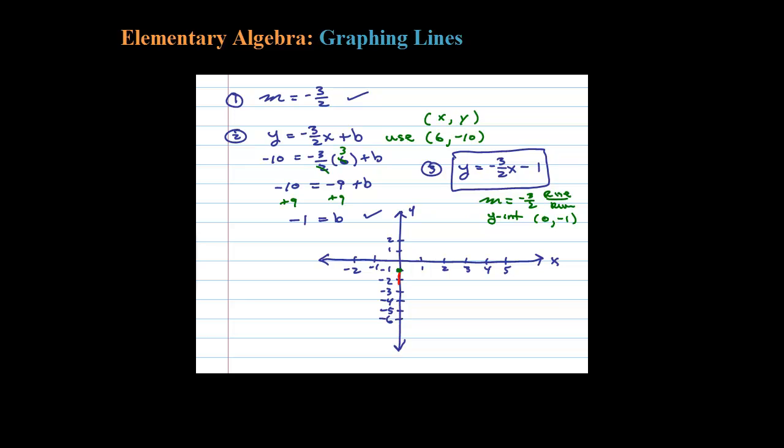We'll go down 3 units—1, 2, 3—and then we'll run 2 units. When you do that you get another point on the graph here, that would be (2, -4). Two points determine a line, so use a straight edge and connect the dots. This is the graph of the line with slope -3/2 passing through (6, -10).